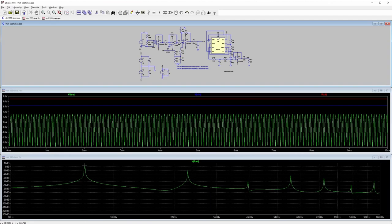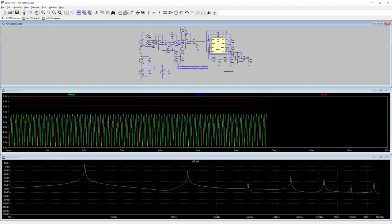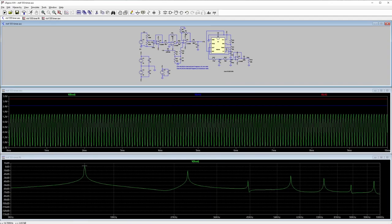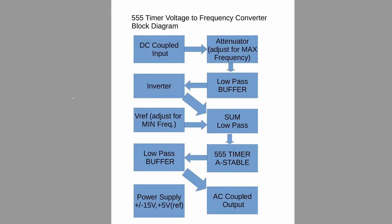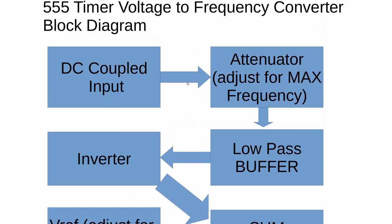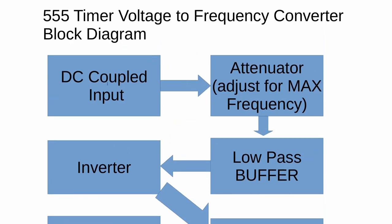The op-amps are all used to adjust the voltages as needed to be within the range of the 555 timer control pin or as buffers. A buffer does exactly what it sounds like. It isolates the output from the previous stage to the load on the output of the circuit. The block diagram for this circuit is shown now. This shows the signal path as the DC input voltage is processed through the chain and eventually turned into a frequency.